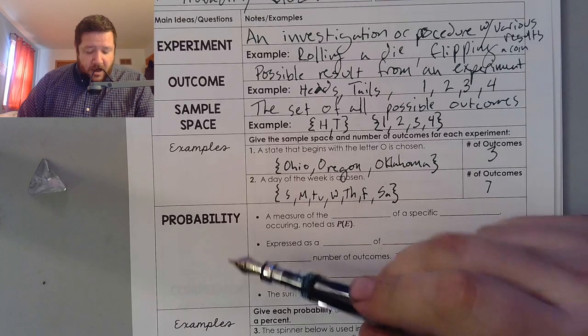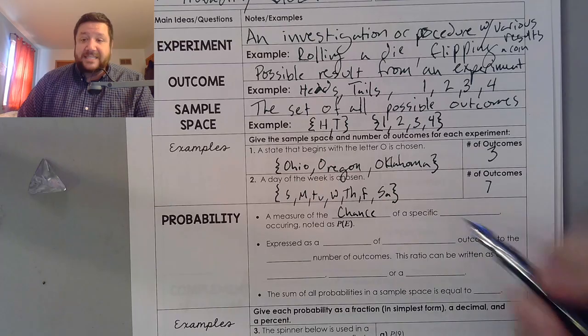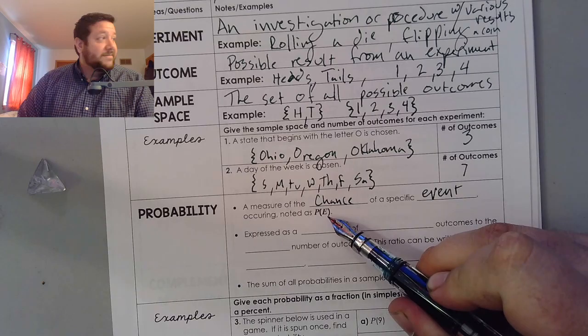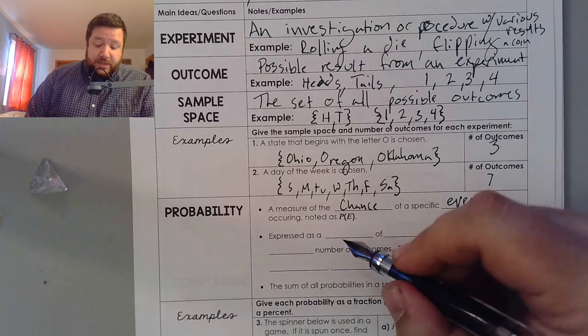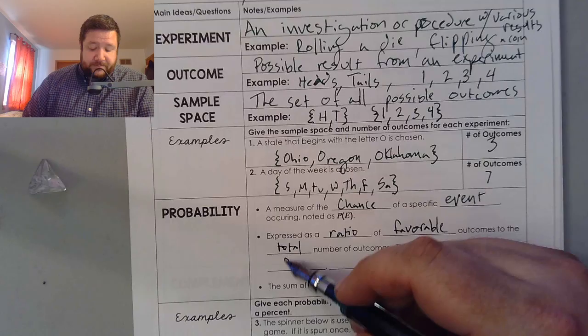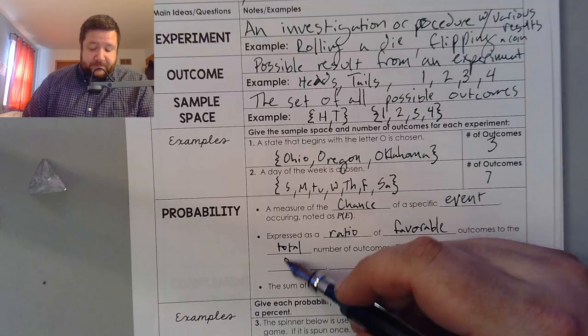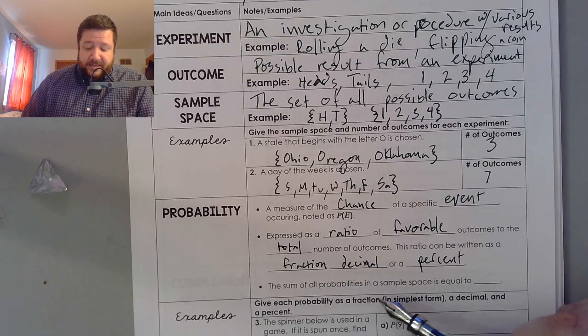Now, a probability is a measure of the chance of a specific event. And you're always going to write it in terms of P(E). So it's the probability of the event that you're looking at. This is going to be expressed as a ratio of the favorable outcomes to the total number of outcomes. This ratio can be written as a fraction, decimal, or a percent.